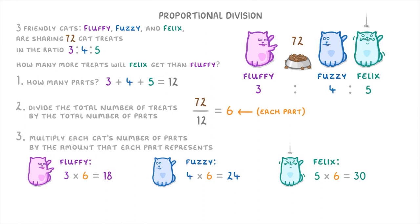Then to actually answer the question, we just need to work out the difference between how many treats Fluffy and Felix get. So we do Felix's 30 treats minus Fluffy's 18, showing us that Felix gets 12 more treats than Fluffy.